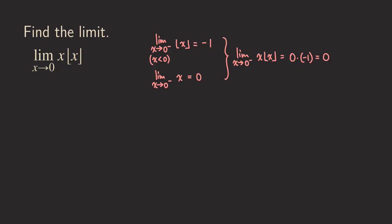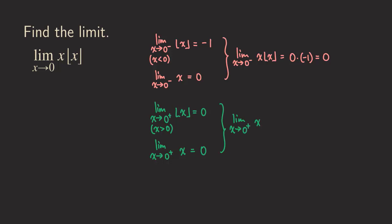Now for the right-hand limit: as x approaches 0 from the right, x is greater than 0, so the largest integer less than something just above 0 is 0. The limit of x is also 0. So the right-side limit of x times the floor of x is 0 times 0, which is 0. Because both one-sided limits are equal, the two-sided limit exists and equals 0.